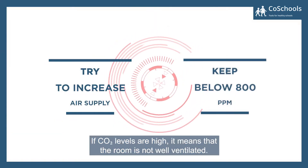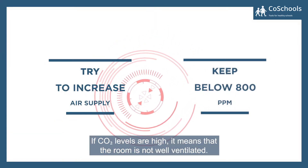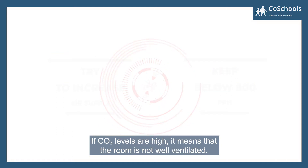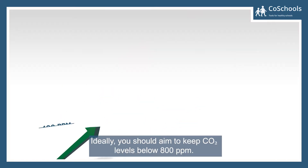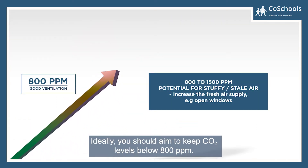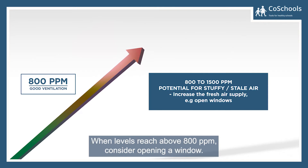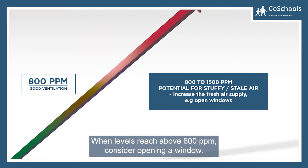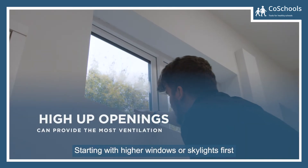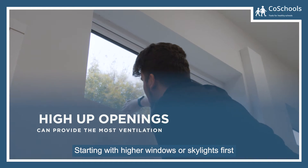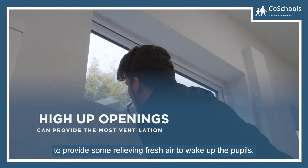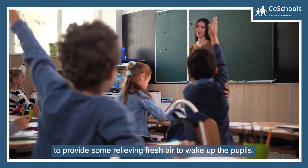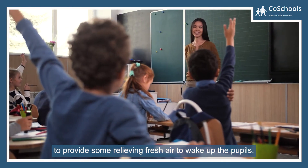If CO2 levels are high, it means that the room is not well ventilated. Ideally you should aim to keep CO2 levels below 800 ppm. When levels reach above 800 ppm, consider opening a window — starting with high-up windows or skylights first — to provide some relieving fresh air to wake up the pupils.